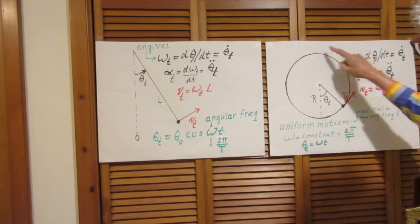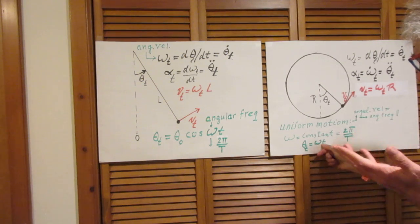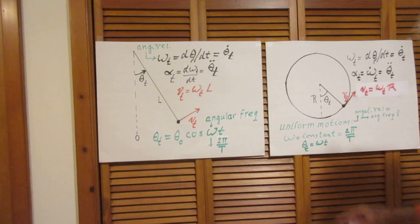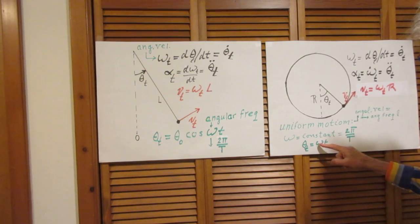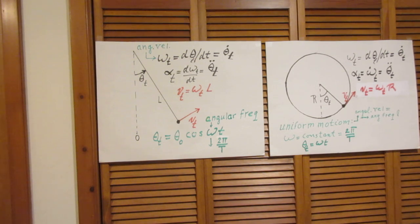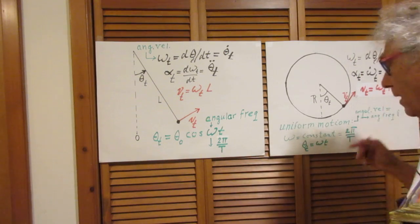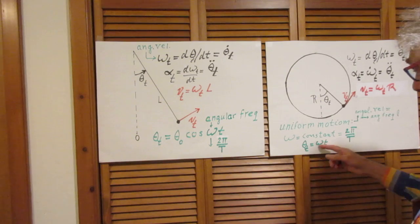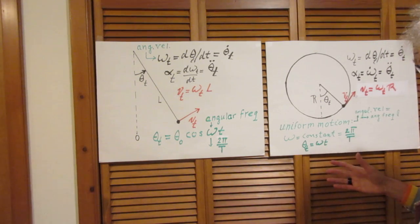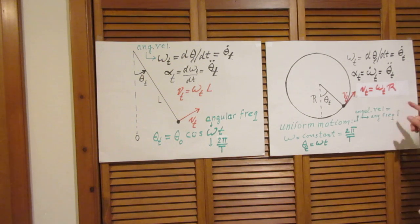If the motion is uniform, constant speed, you can obviously write down that theta of T is some constant omega times T. So theta increases linearly in time. And this is the linearity constant. Remember, when we have linear motion, we have distance d is V times T. V is then constant. If V is constant, then the distance grows linearly in time. Here the angle grows linearly in time. And then the angular frequency is the same as the angular velocity.